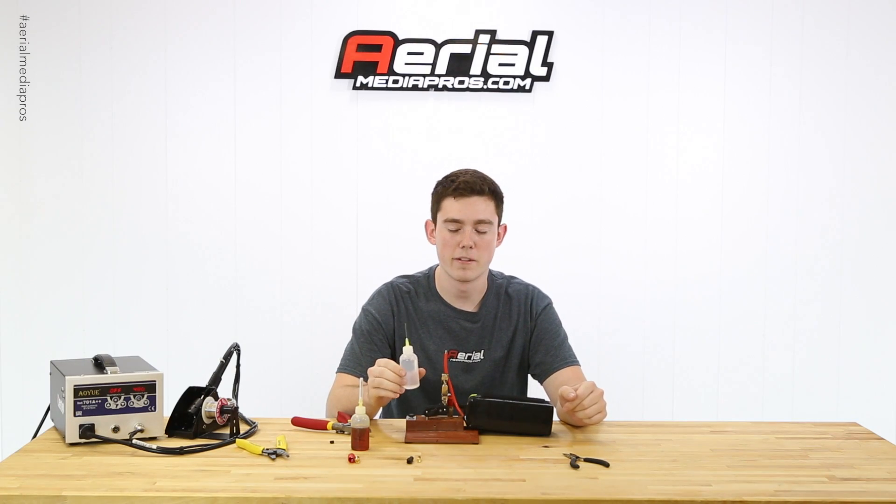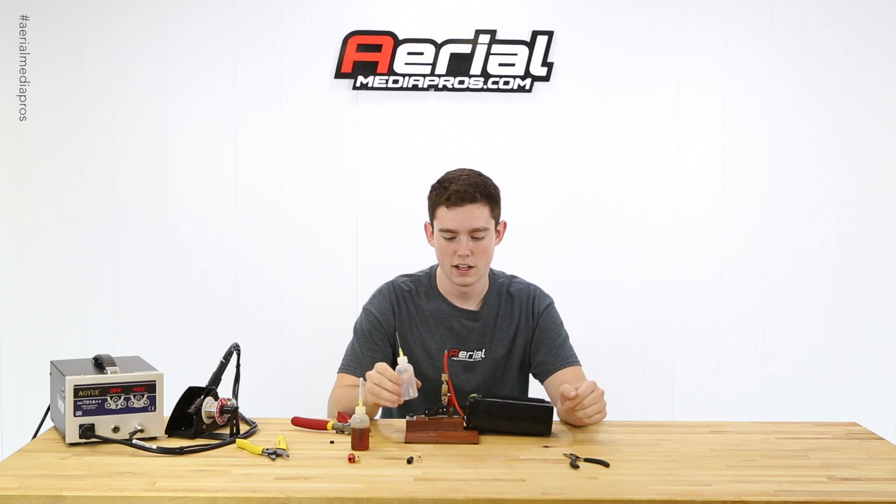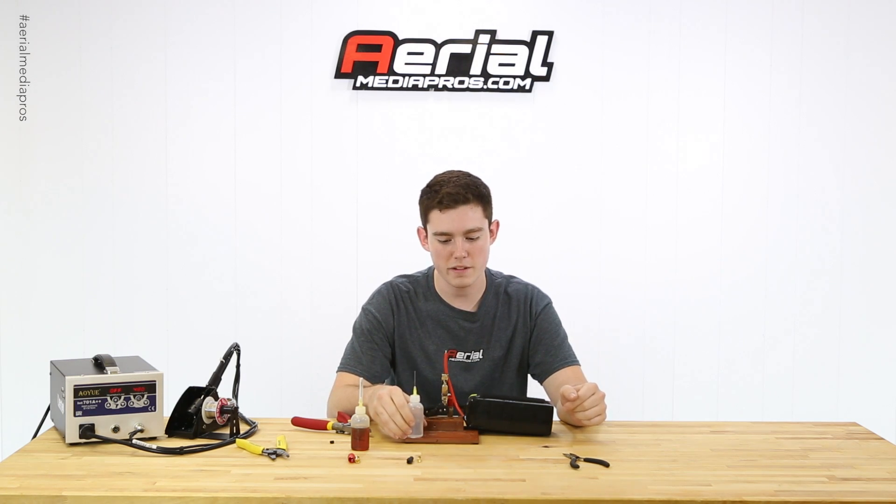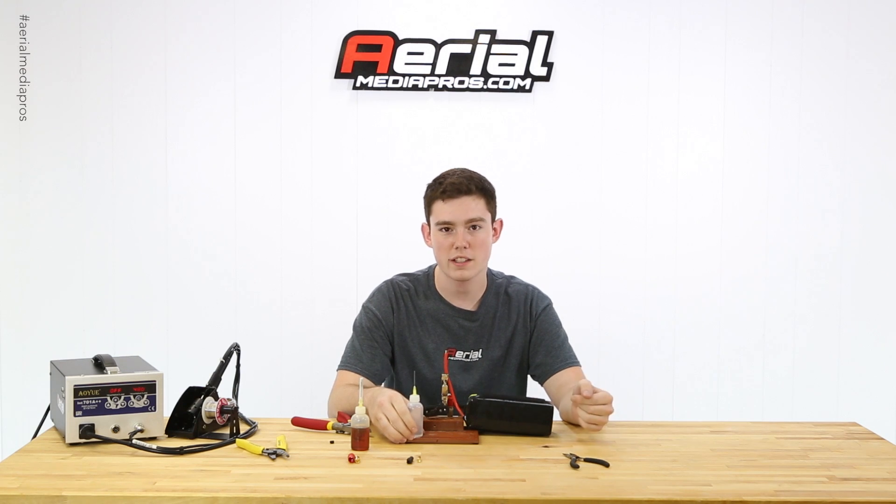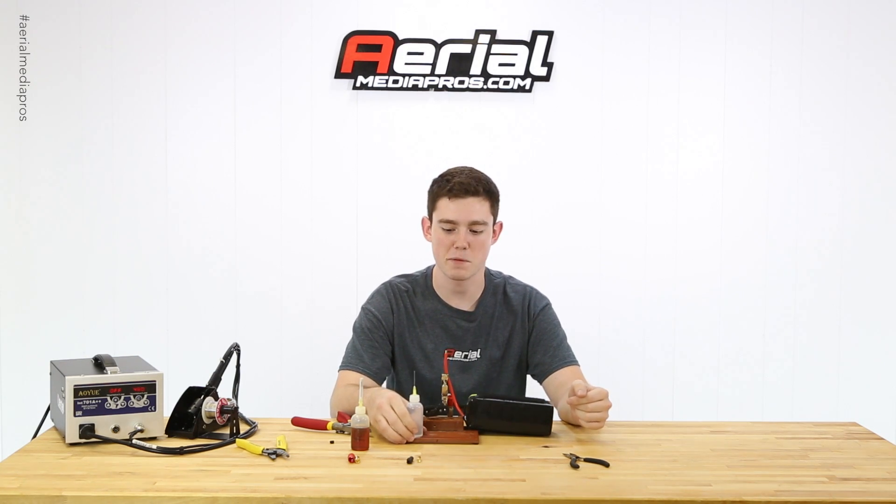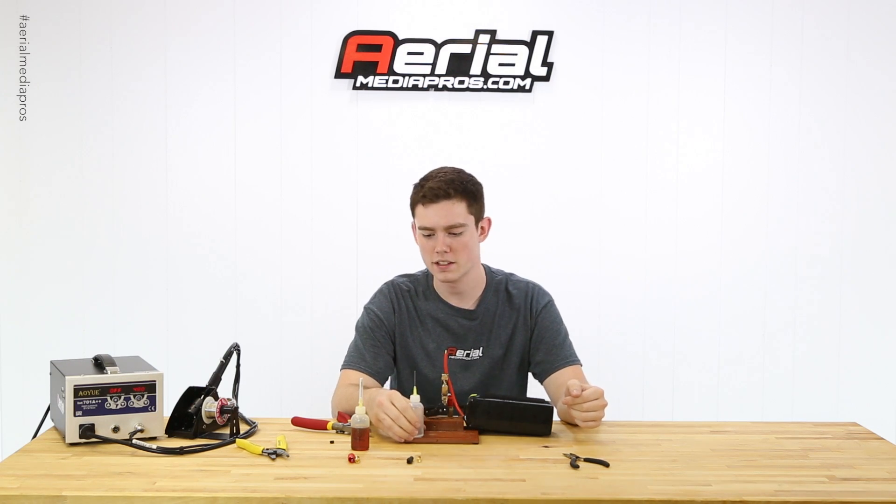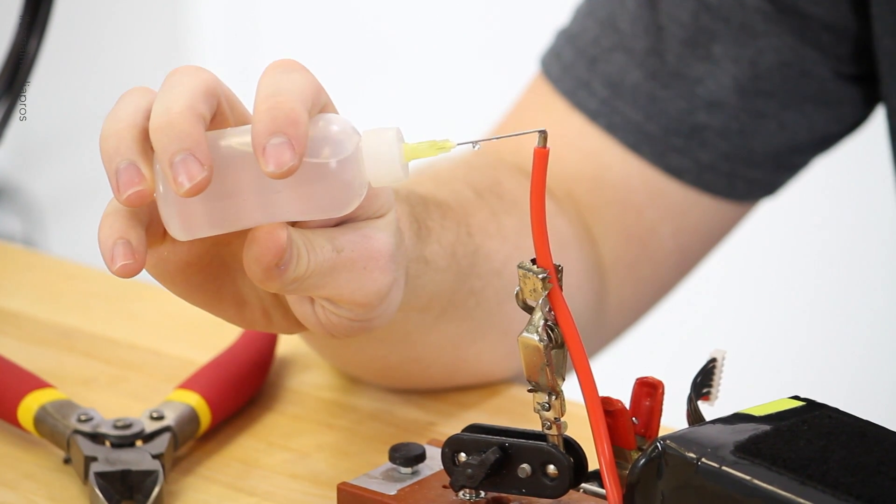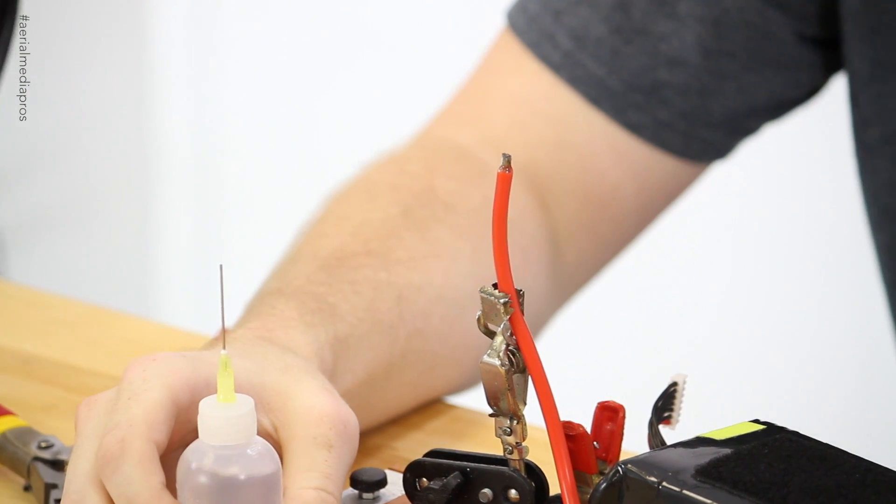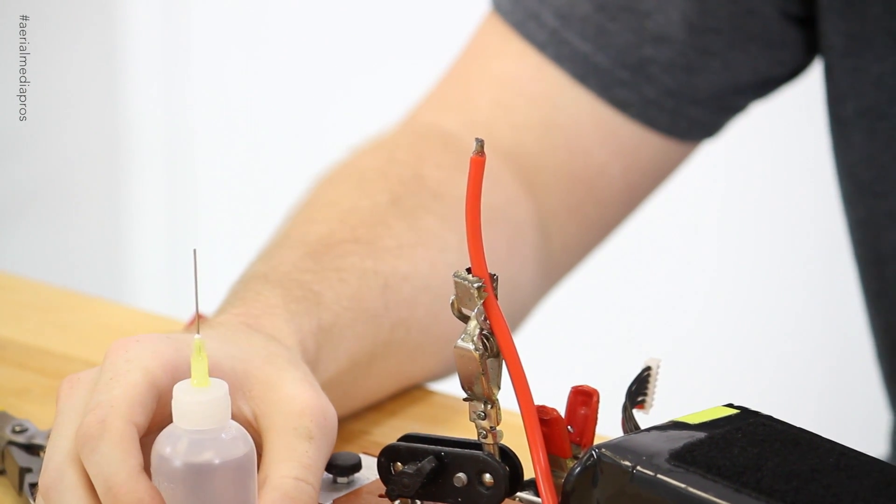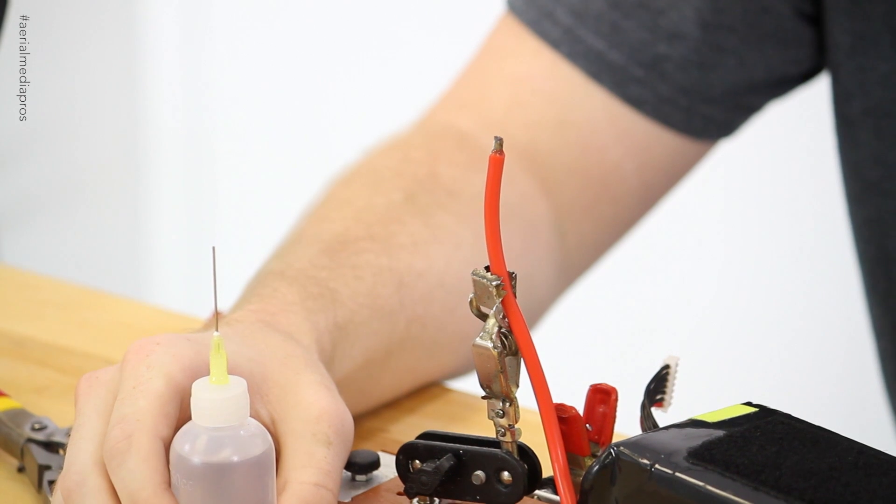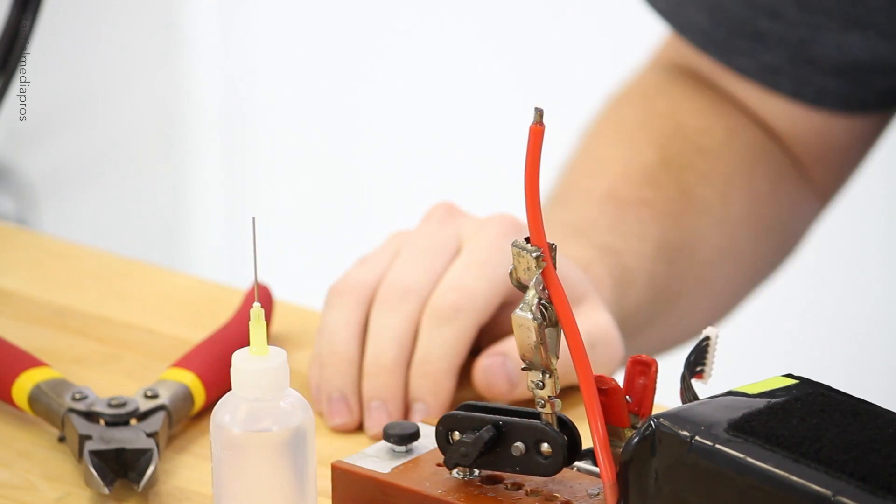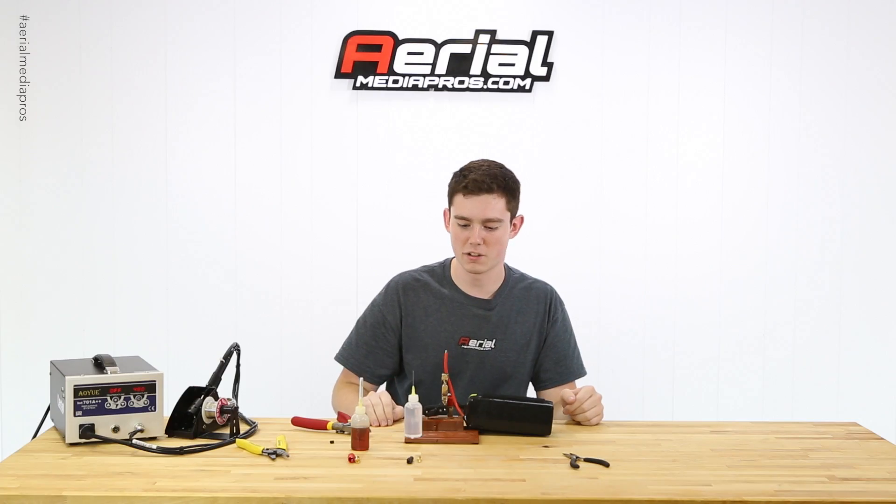We basically want to saturate the wire with flux. I recommend the Kester 951. This is my favorite flux. Using stuff that you get from say like an Ace Hardware or something like that which is plumber's flux, that's not what we need. We need something that's a little bit more fluid than that. That's more of a gel consistency anyways. So just keep filling that up. And then let it soak in.